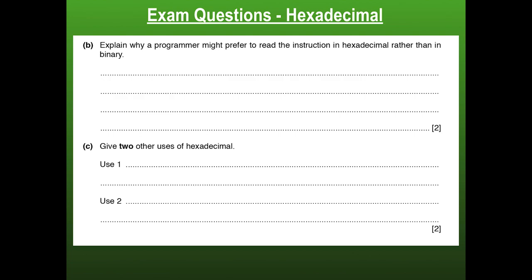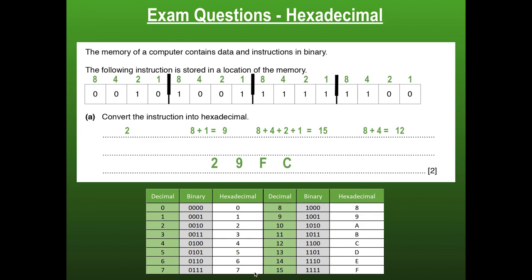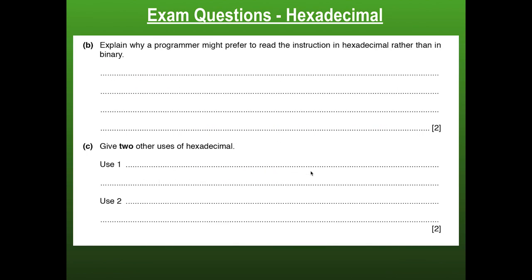The next question follows on and asks: why might a programmer prefer to read the instruction in hexadecimal rather than in binary? Well, look back at that — which was easier for you to read: 29FC, or that long string of ones and zeros? Also notice how much shorter 29FC is compared to those sixteen characters. You can represent a larger number of values using fewer characters. Be careful not to say it is a smaller storage size — it's not. You're just representing the same number of values using fewer characters, and this will take up less space on screen.